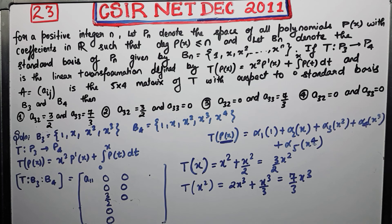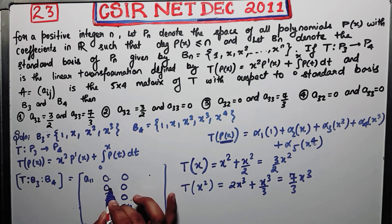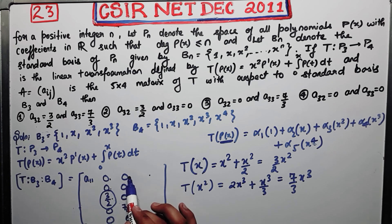So now just compare the coefficient from this equation. By comparing the coefficient, what is your α₁? α₁ is 0, α₂ is again 0, α₃ is again 0, so α₄ is 7/3, and α₅ is again 0. So now see, this one is a_13, this one is a_23, this is a_33. So you need a_33. This one is a_13, a_23, this is a_33. That means a_33 is 0. So you got your a_33, you also got your a_32.